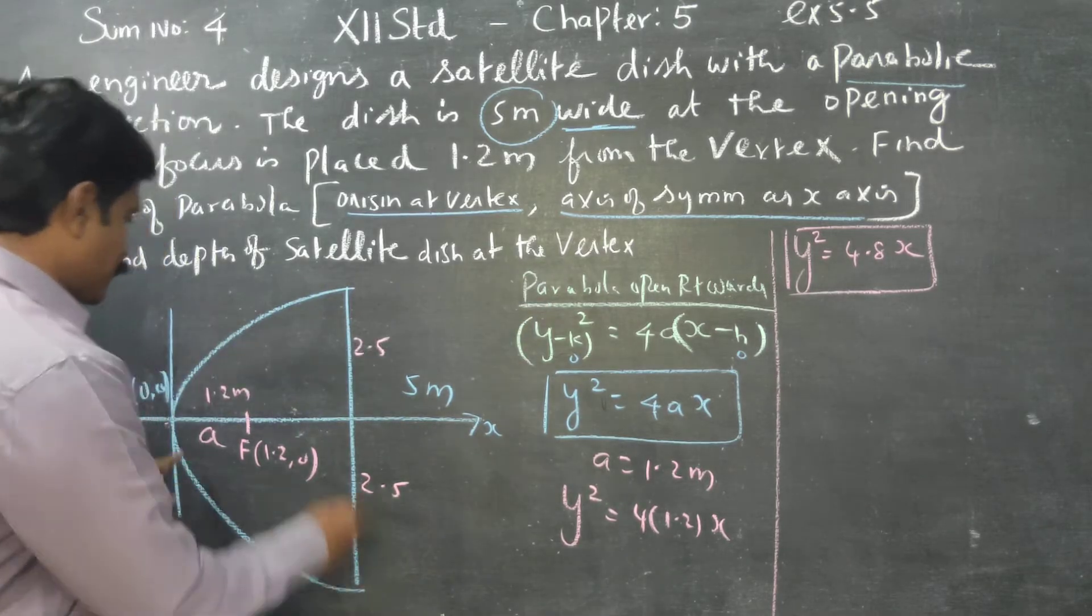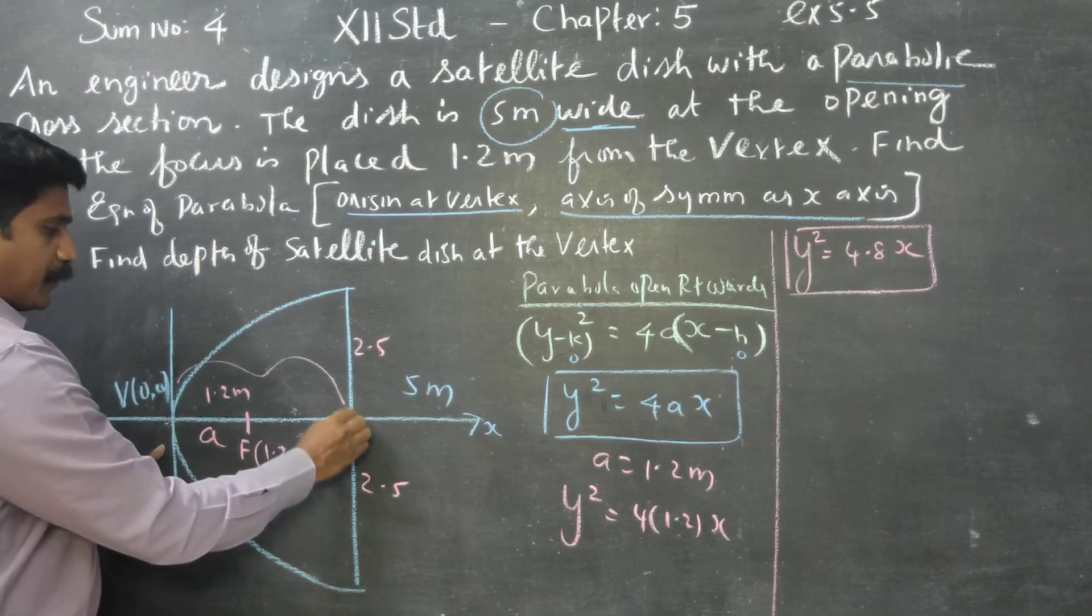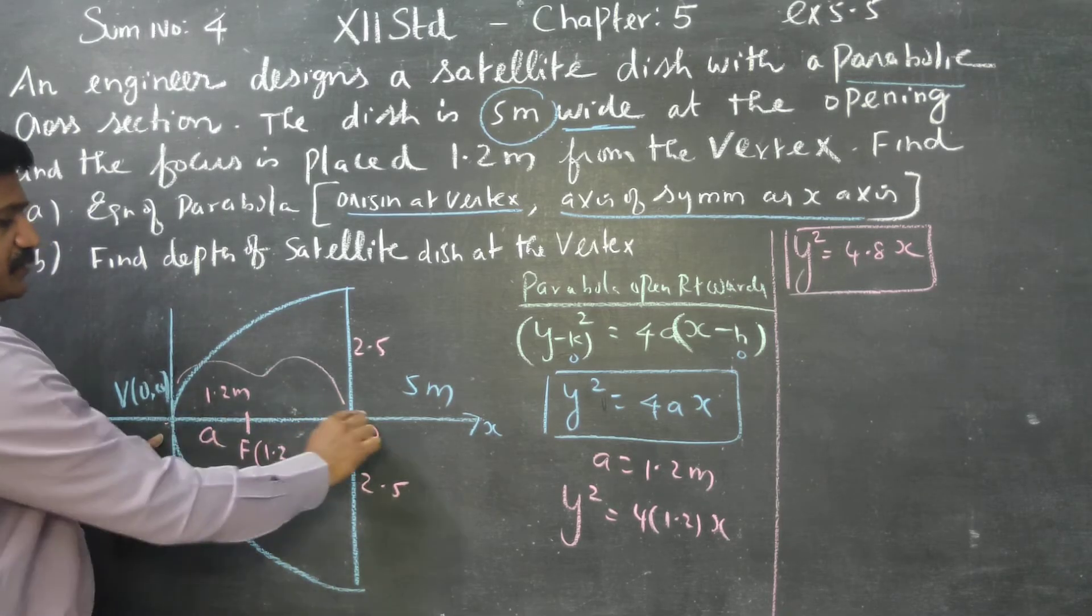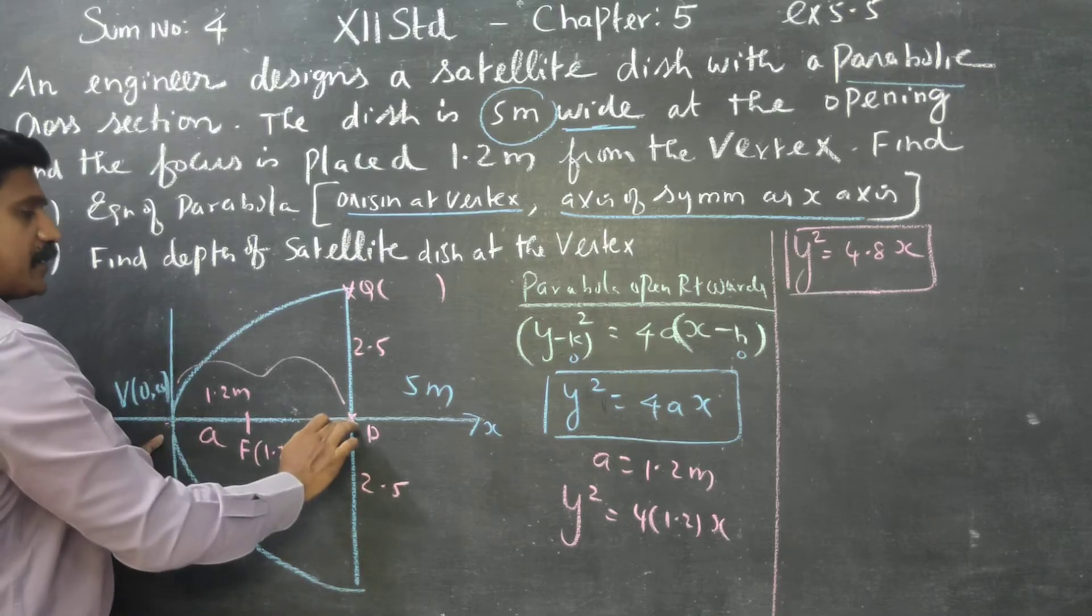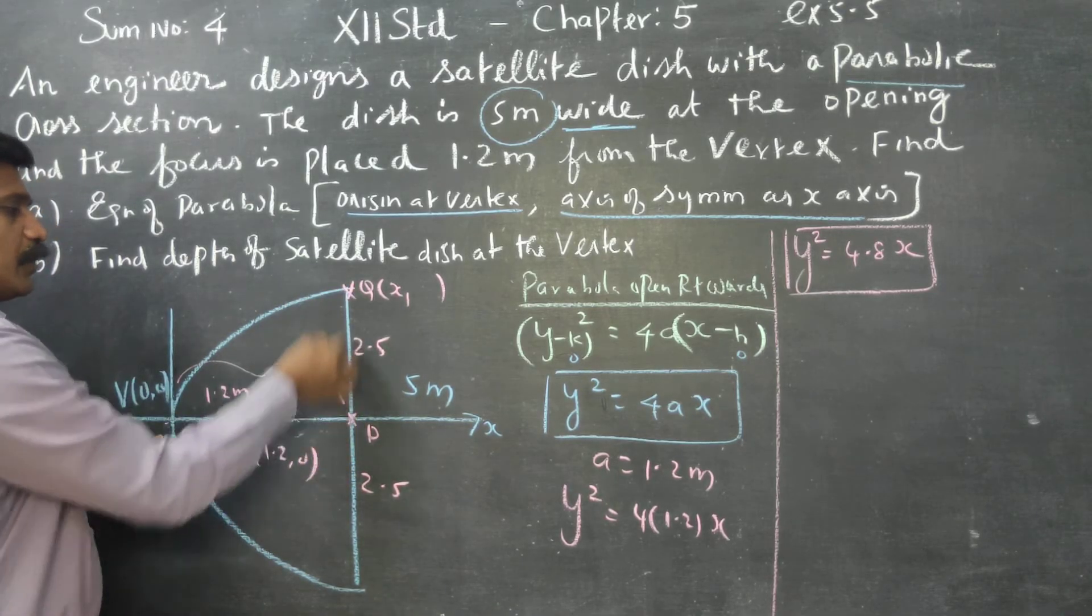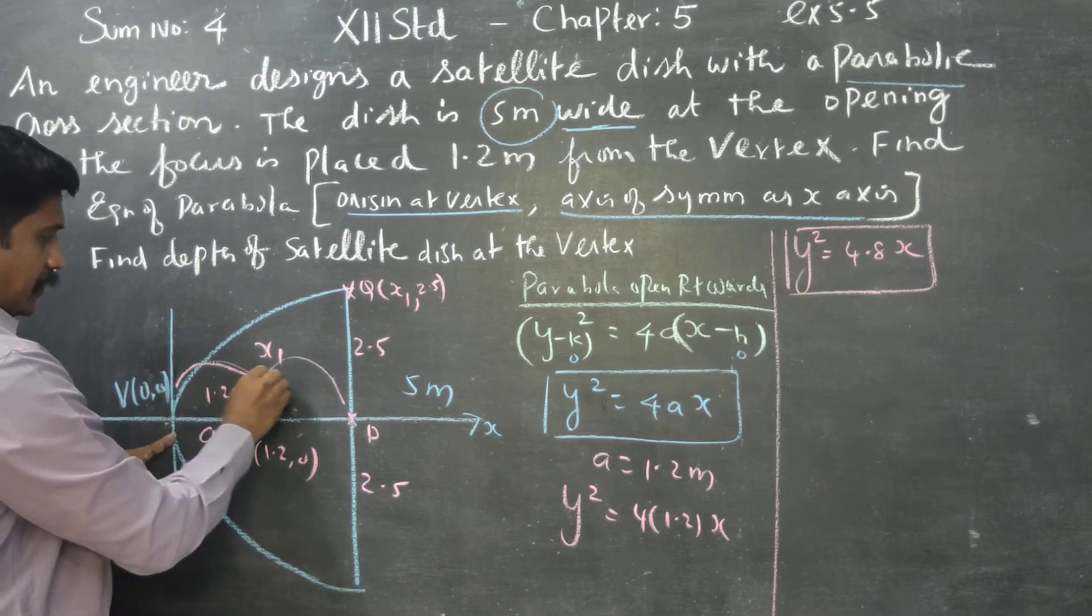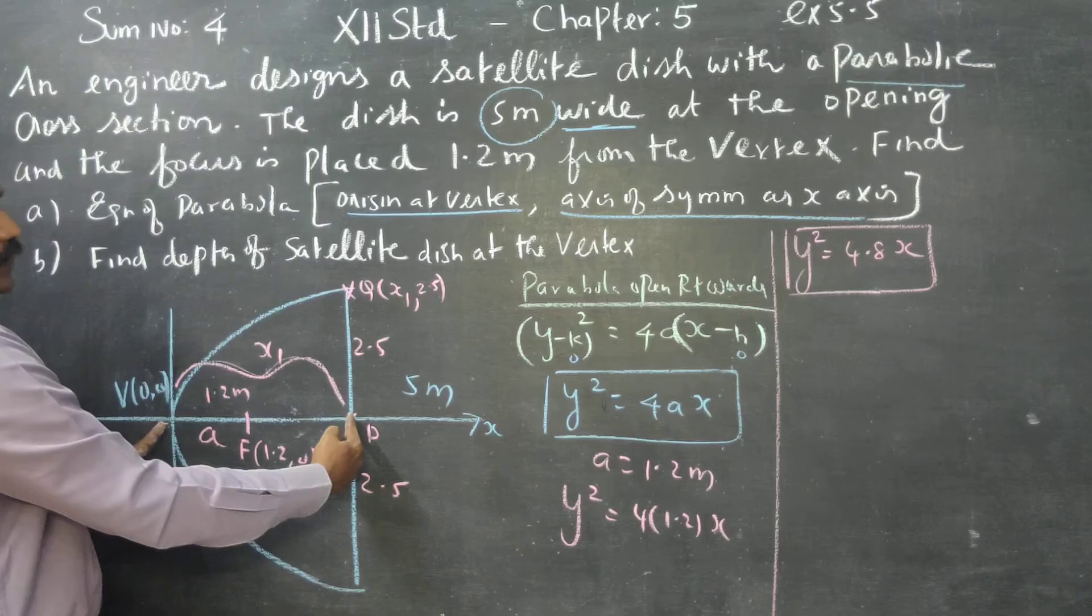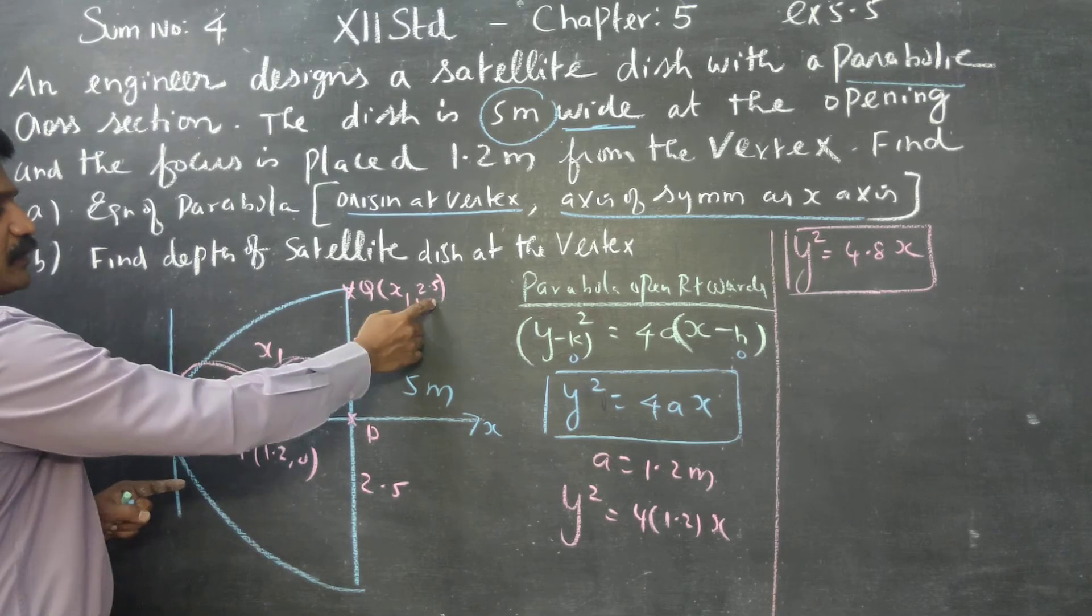Depth of the satellite dish. Depth means the distance. For example, if VP is the depth of the dish, let us come to this coordinate. Let it be Q point. Is the x coordinate the depth? Yes, the x coordinate is the depth. The y coordinate is 2.5. This is the depth of the satellite.